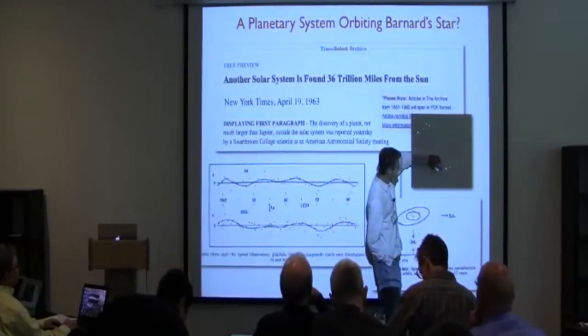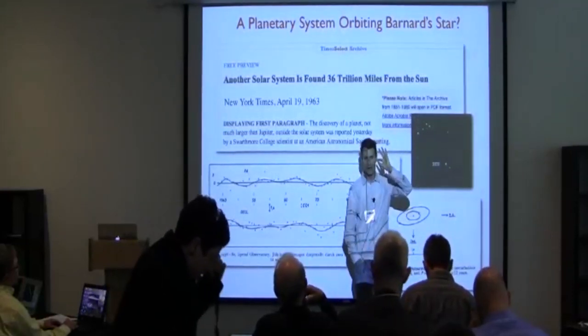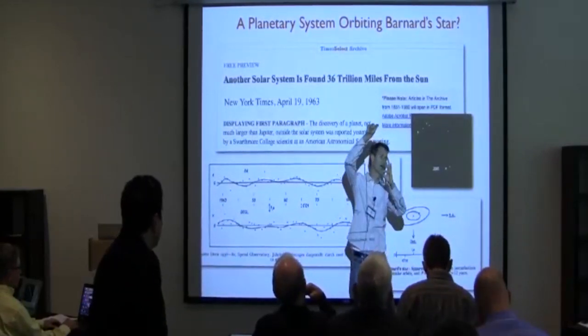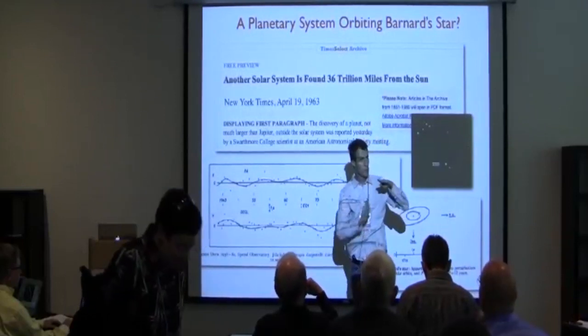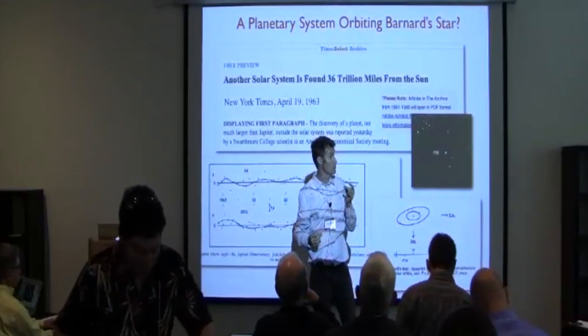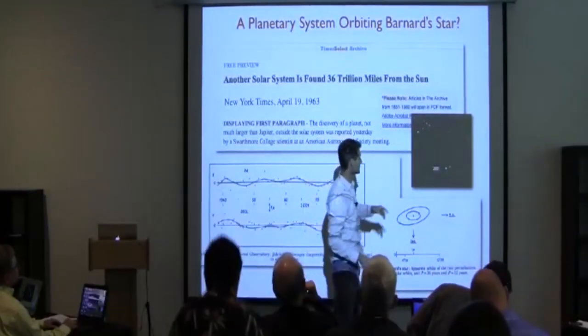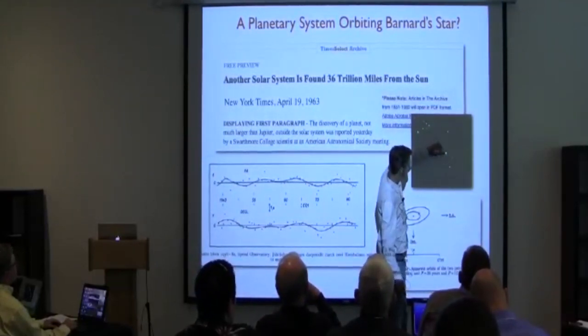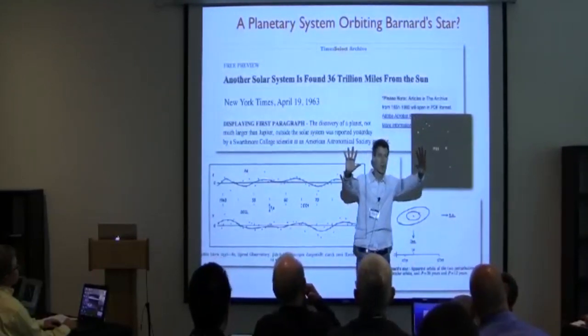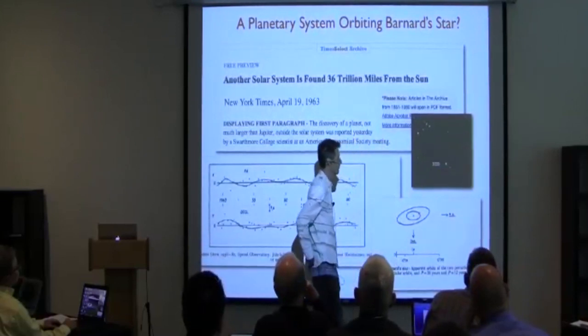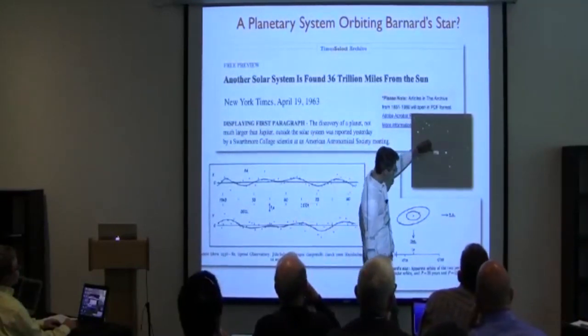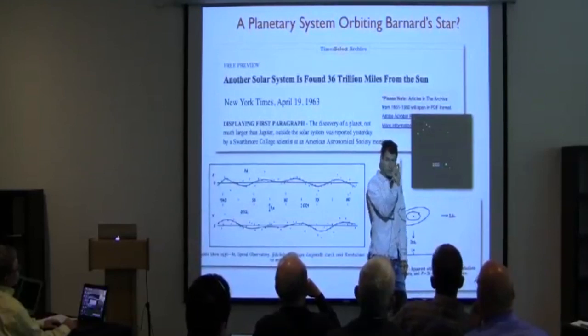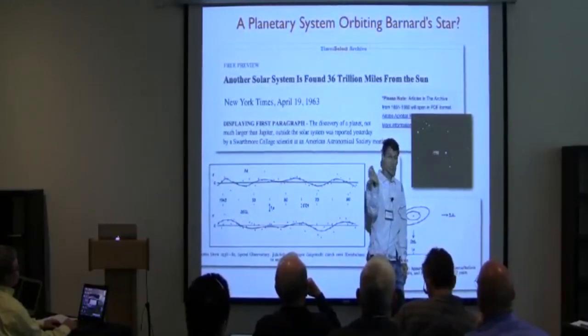Barnard's star is a nearby red dwarf and it has a halo orbit around our galaxy. So it's not participating in the motion that the sun is engaged in, but rather it's diving vertically through the plane of the galaxy. As a result, because it's moving in a different direction and because it's so close, it moves very rapidly across the sky. From 1985 to 2005, you can see that Barnard's star is changing its position relative to the background stars.